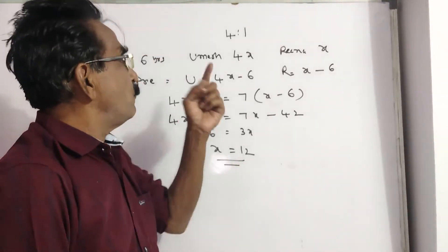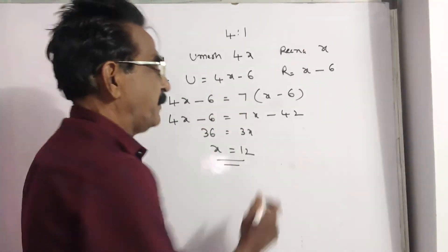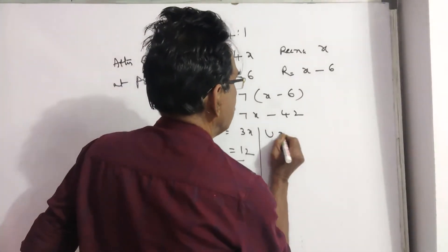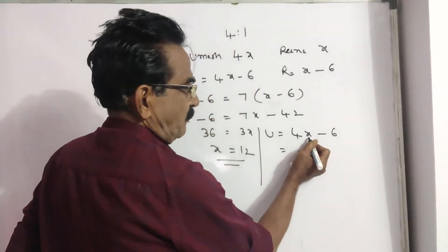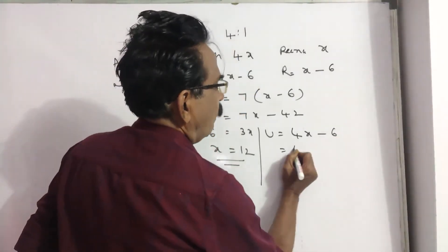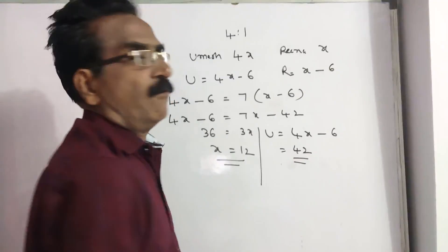Now, Umesh is 4x minus 6. That is equal to 4 times 12, so 48 minus 6, which is 42 years. Umesh is 42 years.